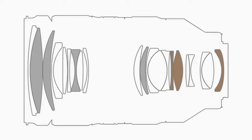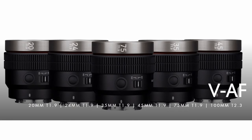This variance can be due to lens construction, the number of glass elements, lens coatings, and various other factors. With cinema lenses and t-stops, two lenses with the same t-stop theoretically should produce the same amount of light and the same exposure, even if you change from lens to lens.